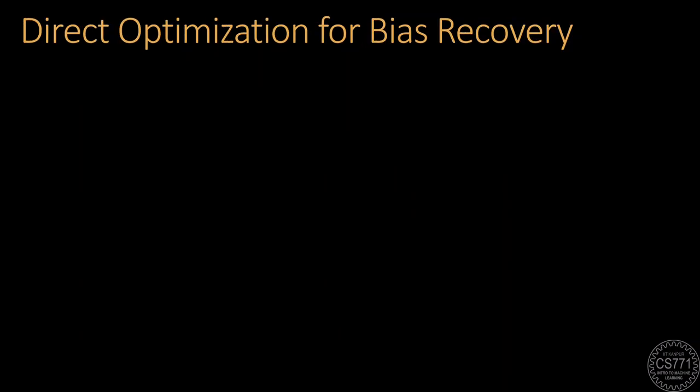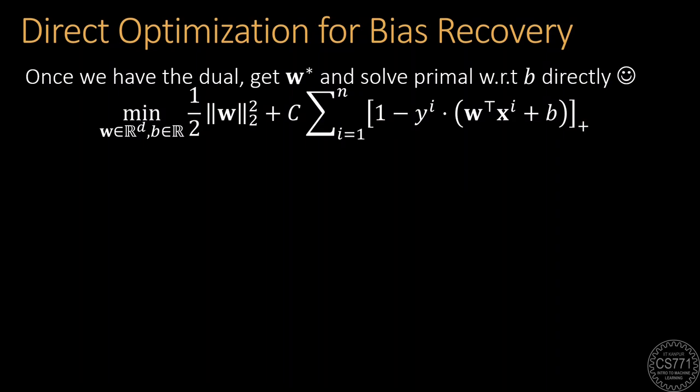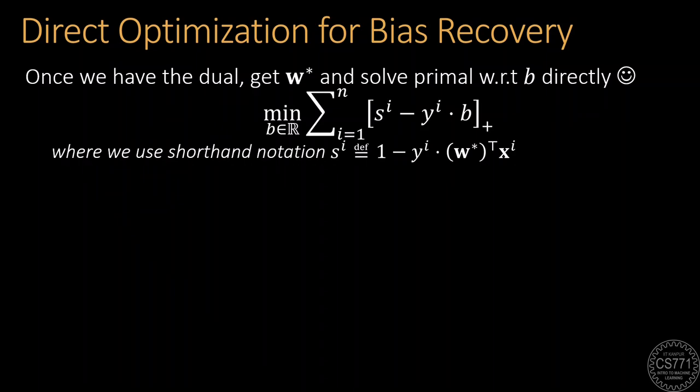In this alternate strategy, once we have solved the dual and obtained w*, we simply solve another optimization problem to find b* directly. We see that there are no constraints on b* and the objective function is also much simpler since w* has already been fixed.